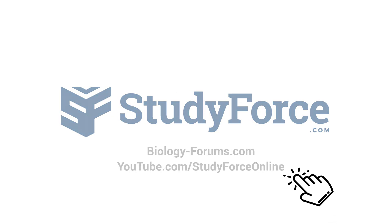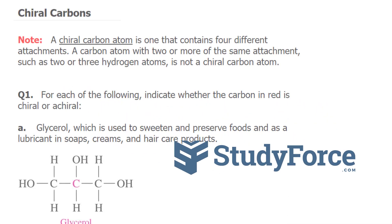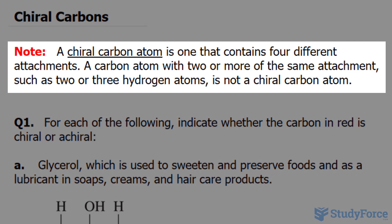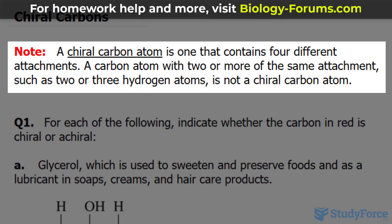In this lesson, we'll be discussing chiral carbons. A chiral carbon atom is one that contains four different attachments. In addition, a carbon atom with two or more of the same attachments, such as two or three hydrogen atoms, is not a chiral carbon atom.